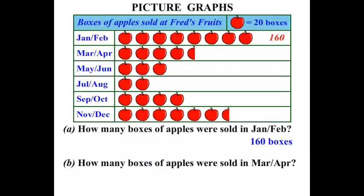Part B: how many boxes of apples were sold in March-April? Each apple is worth 20 boxes, but you can see there that we haven't got a full apple — we've got half an apple. So if a whole apple is worth 20 boxes, half an apple will be worth 10 boxes. Counting: 20, 40, 60, 80, and that half apple is worth 10 more. So 80 and 10 is 90 boxes for the March-April period.